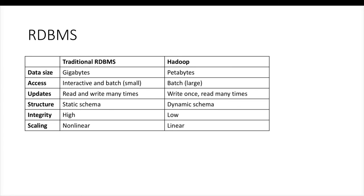Traditional RDBMS have a static schema structure — you define the structure of your data by creating the table, and while loading the data, the RDBMS enforces that structure. If the data is out of sync with the structure, it will complain. Hadoop has a dynamic schema and will not enforce the schema while loading the data. Data integrity is very high in traditional RDBMS; in Hadoop, data integrity is low and in some cases not there at all. Traditional RDBMS are typically non-linear in terms of scaling, whereas Hadoop can scale linearly for most use cases and gives better performance than RDBMS databases.